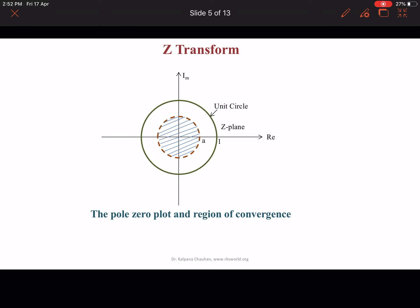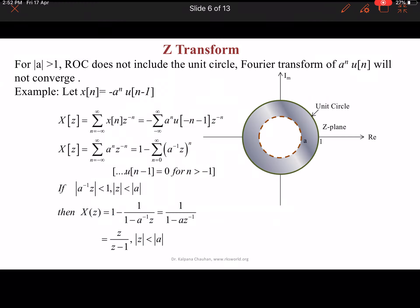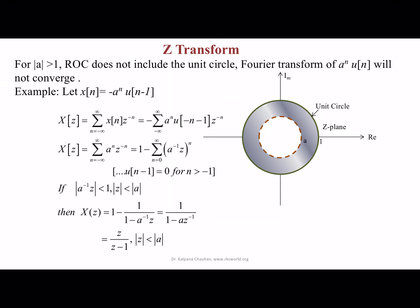This graph shows the region of convergence — a plot of the ROC. Here we have a unit circle, and inside we have a region with radius A. The dotted circle shows the region of convergence. If the magnitude of A is greater than 1, then the ROC does not include the unit circle, and the Z-transform of A^n · u(n) will not converge.